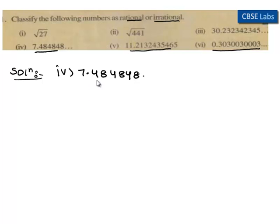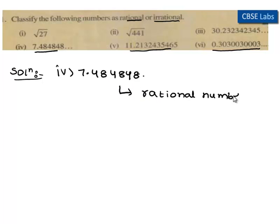Here, 7.484848 is a terminating decimal. So we can say that 7.484848 is a rational number. Hence, 7.484848 is a rational number.